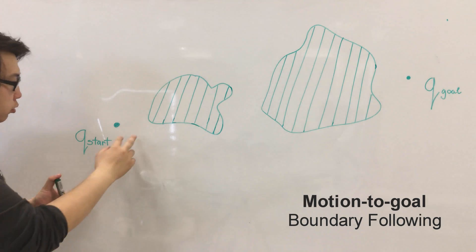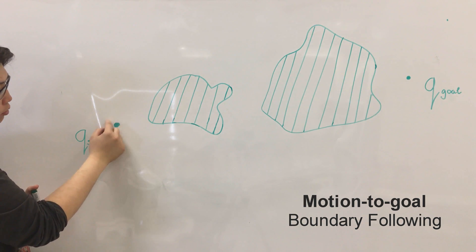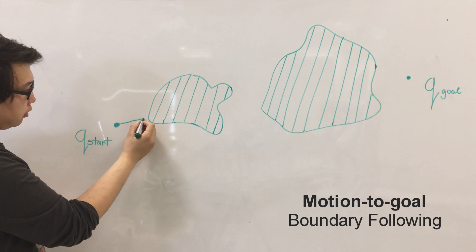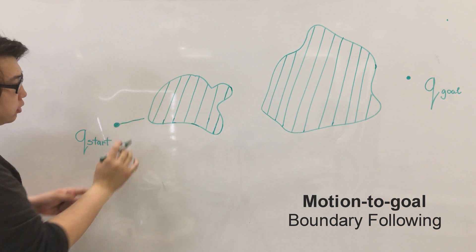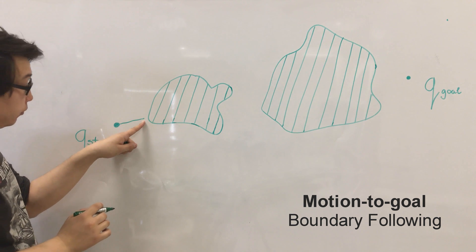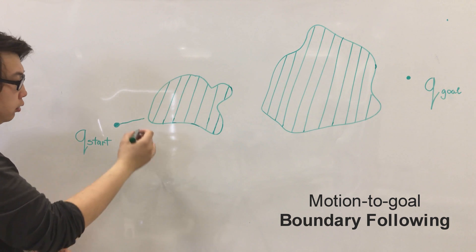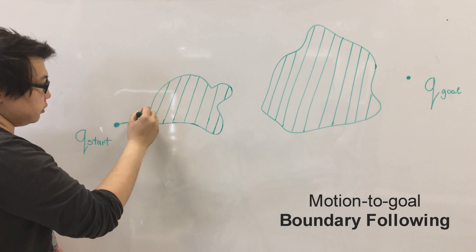We will start with motion to goal because in the vicinity of the robot there are no obstacles. So imagine it goes like this and then it detects that it hits the obstacle. After that we will start going around the obstacle like this.